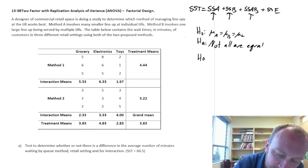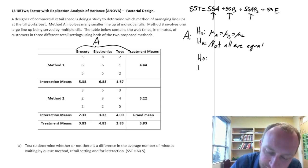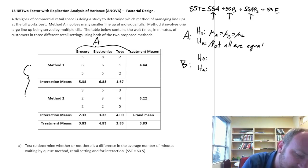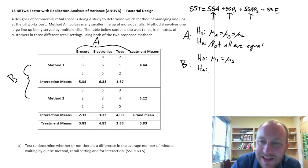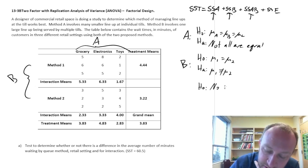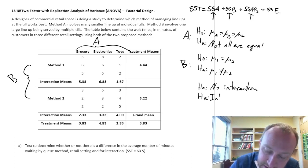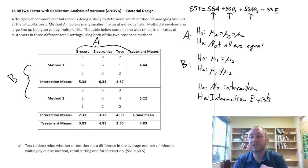For Factor A, we'll call this our first set. For Factor B, it looks like we have just two treatments, so the null is mu 1 equals mu 2, and the alternative is simply that mu 1 and mu 2 are not equal. For interaction, the null hypothesis is that there is no interaction, and the alternative is that interaction exists — meaning specific combinations of treatments result in a difference relative to other combinations.